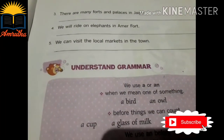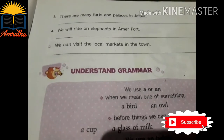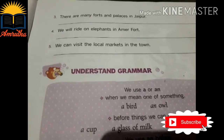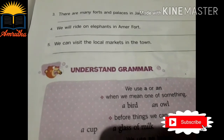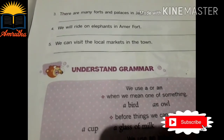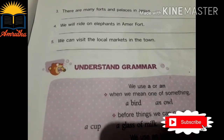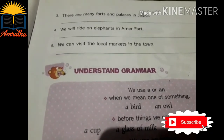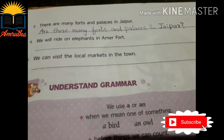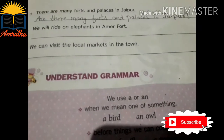Next, third one: there are many forts and palaces in Jaipur. For that, we have to change 'are' to first and 'there' to second. Are there many forts and palaces in Jaipur? Question mark.